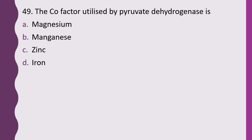Question 49. The cofactor utilized by pyruvate dehydrogenase is: magnesium, manganese, zinc, or iron. The correct answer is option A, magnesium.